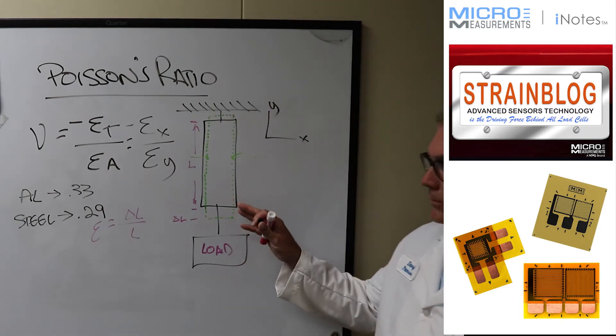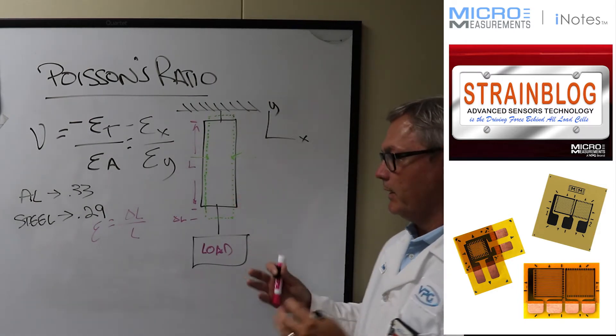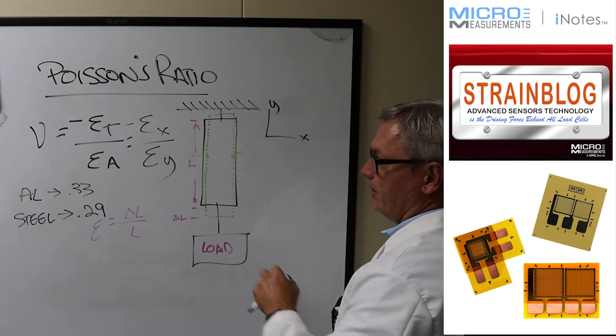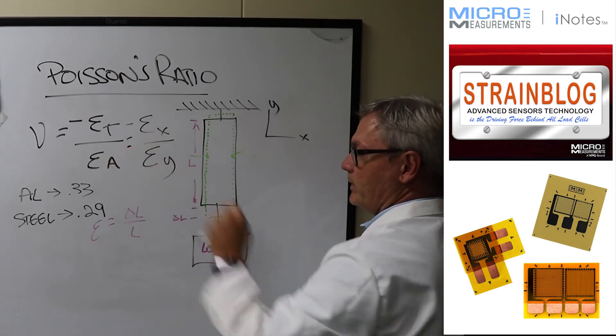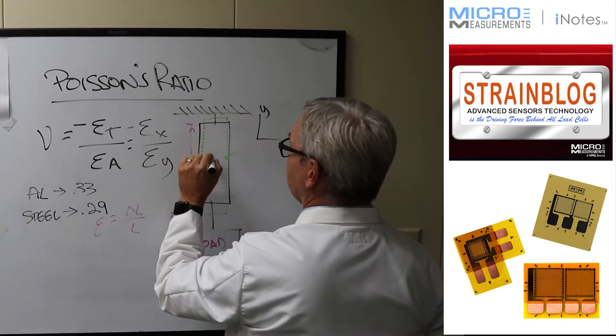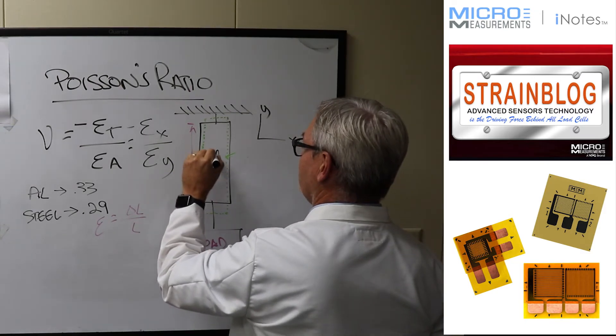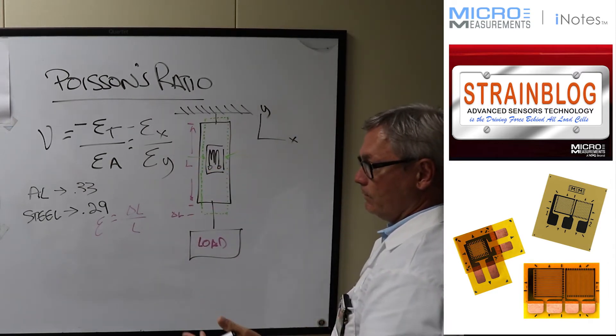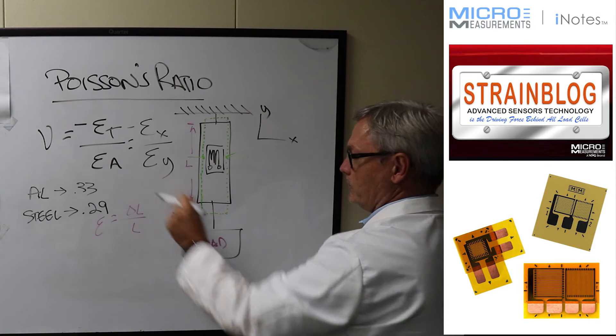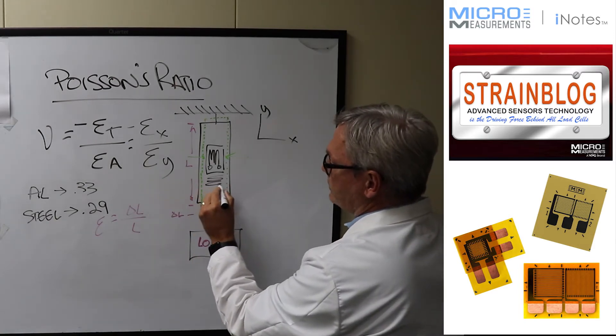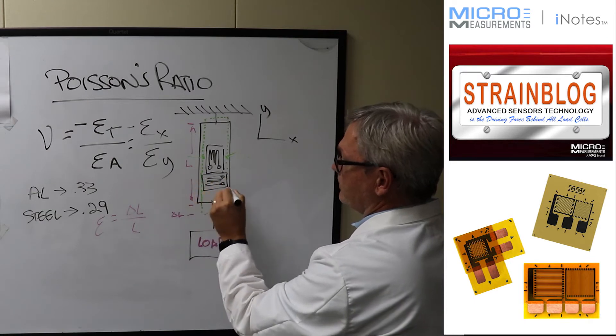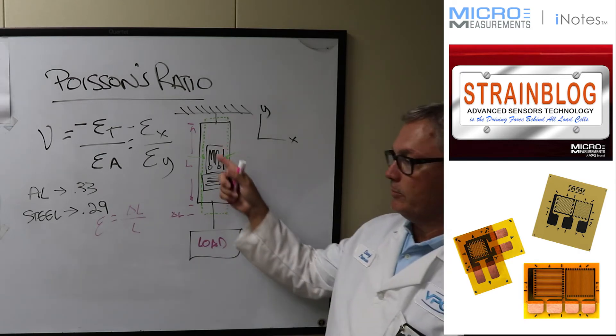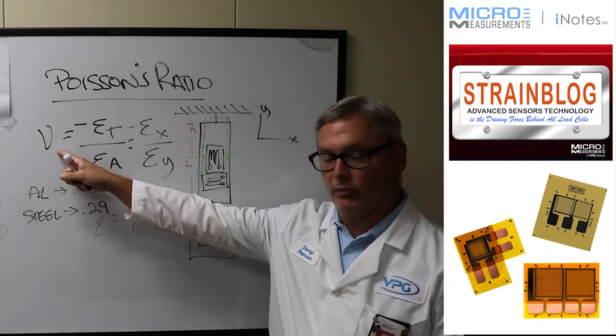And with composite materials and plastics, you'll see a lot more variation in it because of the nature of the composite or the nature of the plastic. Now if your goal was to try to find what the Poisson ratio is, all you really have to do is install one strain gauge in the y direction or the longitudinal or axial direction and you install a second strain gauge in the transverse direction. Install two gauges on this piece, you put the load on it, we look at the ratio between these two strain gauges and we have our Poisson ratio.